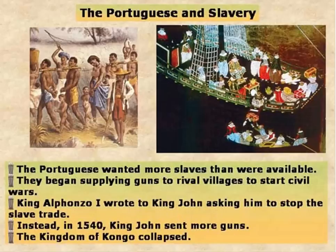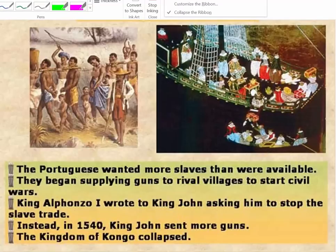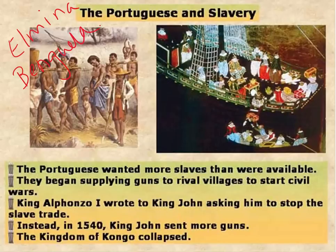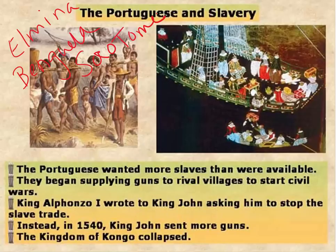They would create large coastal fortress towns — places like St. Louis, Cape Coast, Elmina, and Angola. These are some of the names of the coastal fortresses that the Portuguese built. It wasn't possible for them to really get into the interior of Africa.